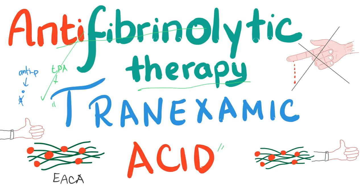To destroy the clot. What is the goal of tranexamic acid and aminocaproic acid? To stop the TPA from destroying the clot. So they prevent the TPA from causing thrombolysis — in other words, they preserve the clot. And this is the topic of today's video.